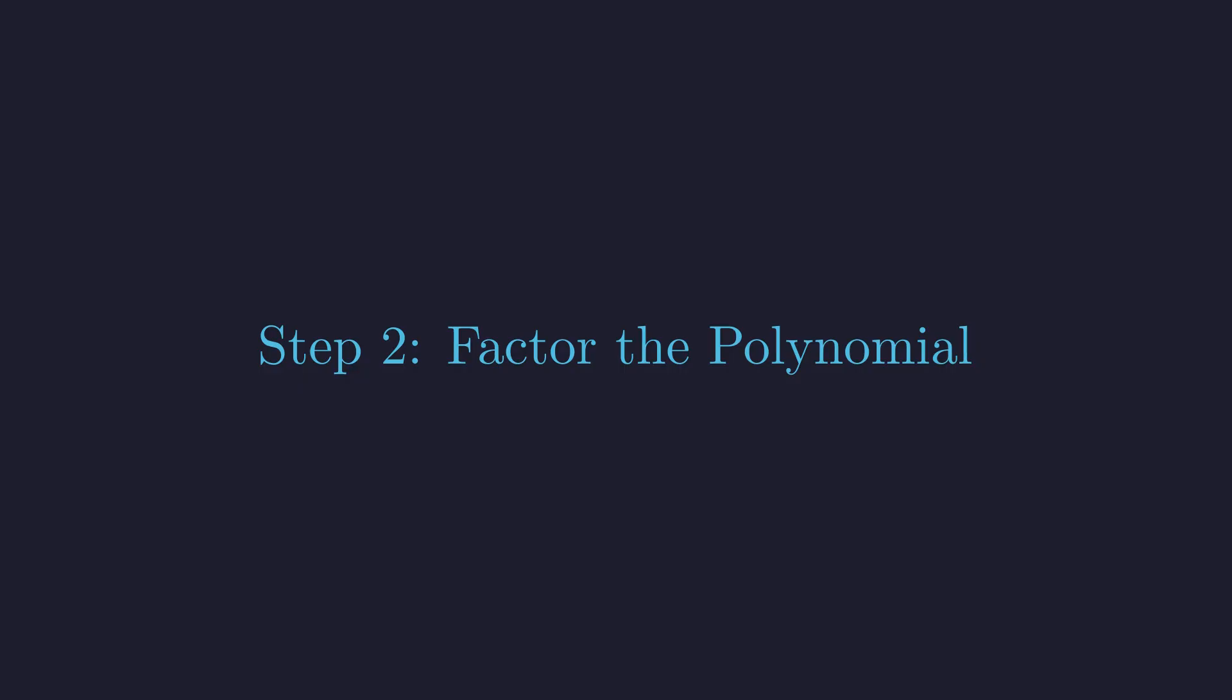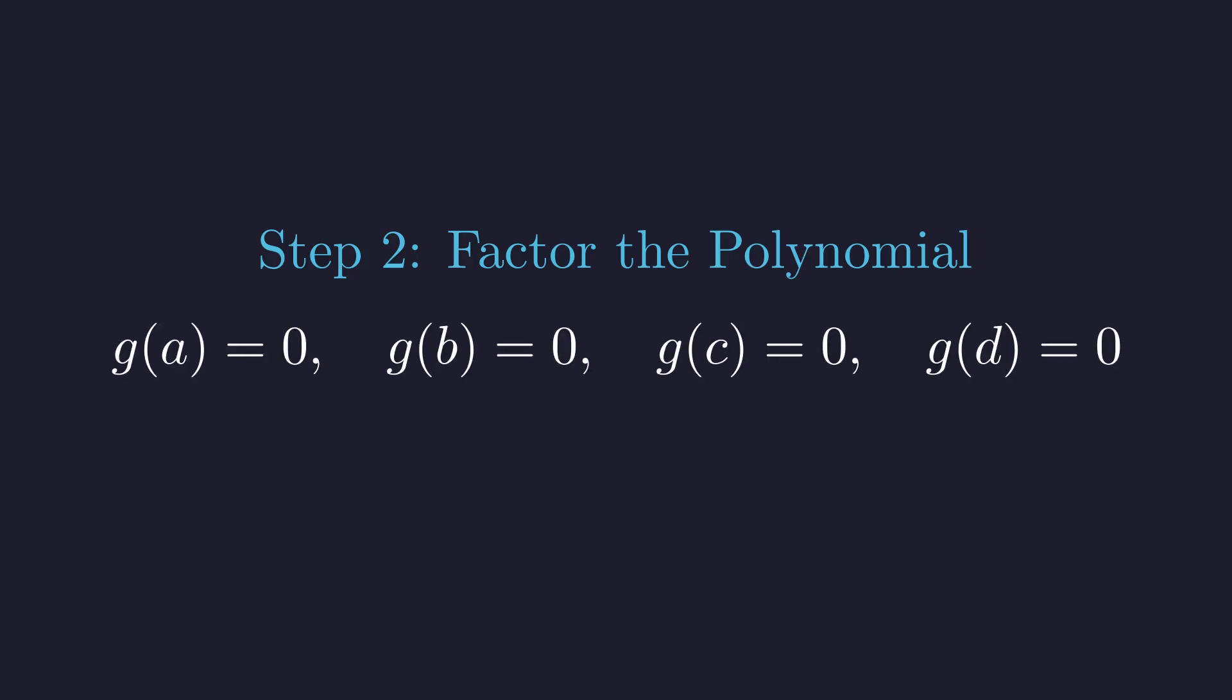Now, having roots is incredibly useful because it tells us about the factors of our polynomial. We just established that g of x has roots at a, b, c, and d. There's a fundamental theorem that says whenever a polynomial has a root at some value, say a, then x minus a must divide that polynomial.